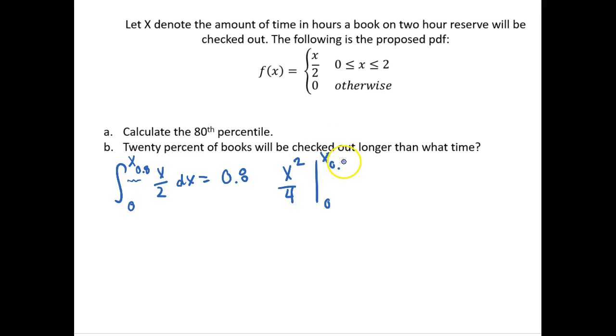This is then equal to x₀.₈ squared over 4 minus 0, and this has to be equal to 0.80. So now all we need to do is solve for this value.